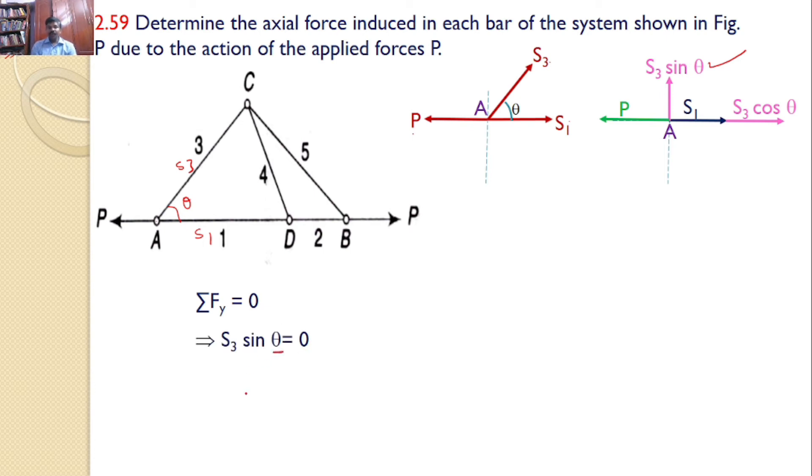Theta cannot be 0. Hence, what is the other alternative? S3 must equal 0. So you know that S3 equals 0. And if you apply sigma Fx equals 0, so S1 plus S3 cos theta equals P, but we know that S3 equals 0. Hence, you can say S1 equals P.